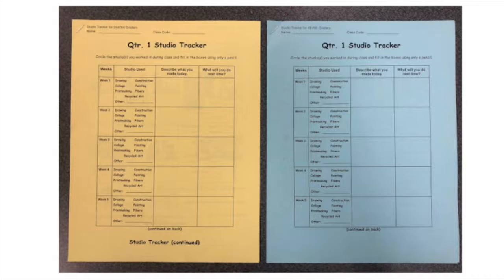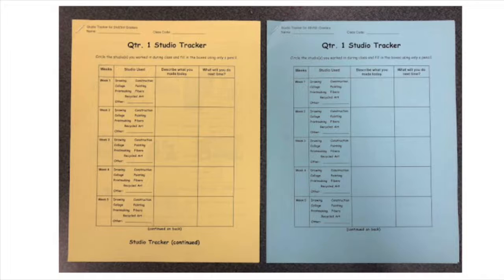For this activity, you will reflect or think deeply about your artistic process and growth. You will need your studio tracker, which will be yellow for grades 2nd and 3rd, and blue for grades 4th and 5th. You will also need a pencil.